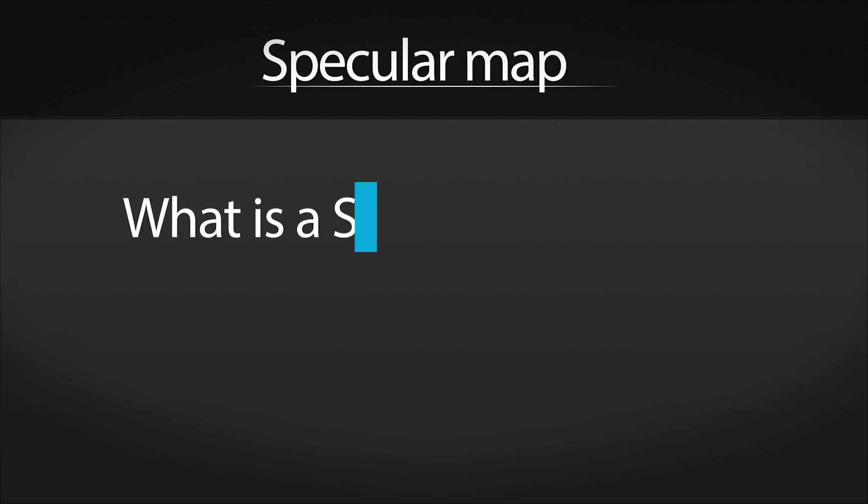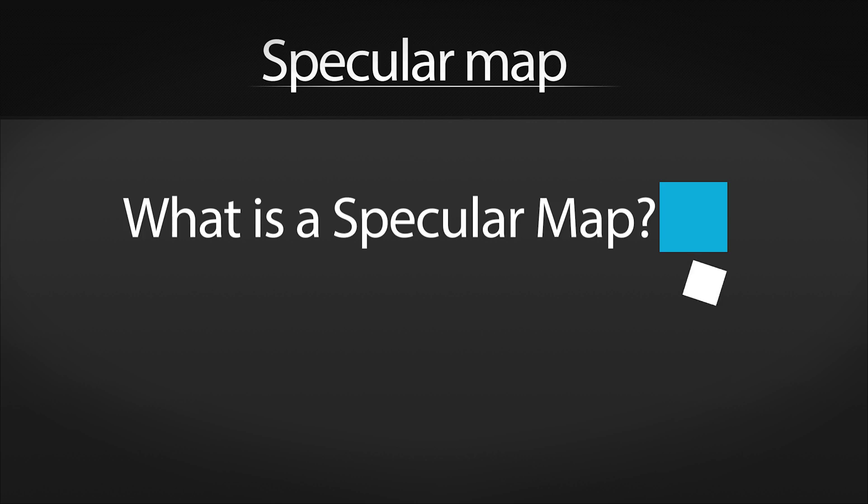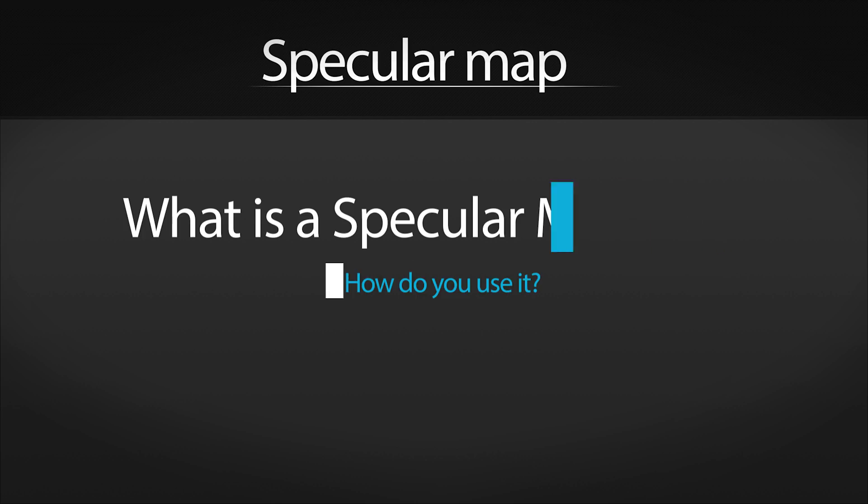This video will explain what a specular map is and how you use it. A specular map is used to add reflections from your environment onto your models or surface.